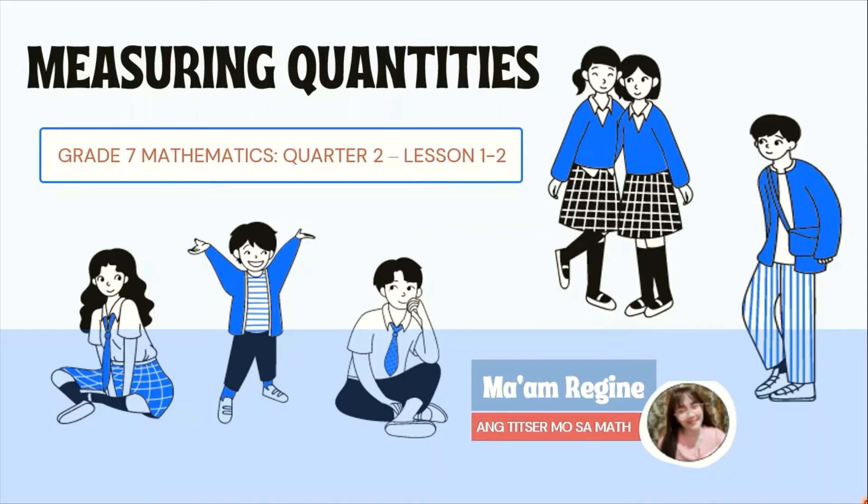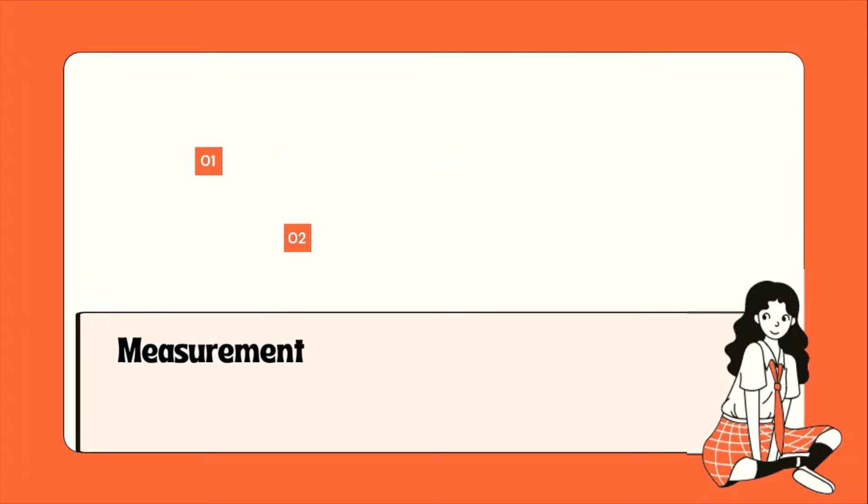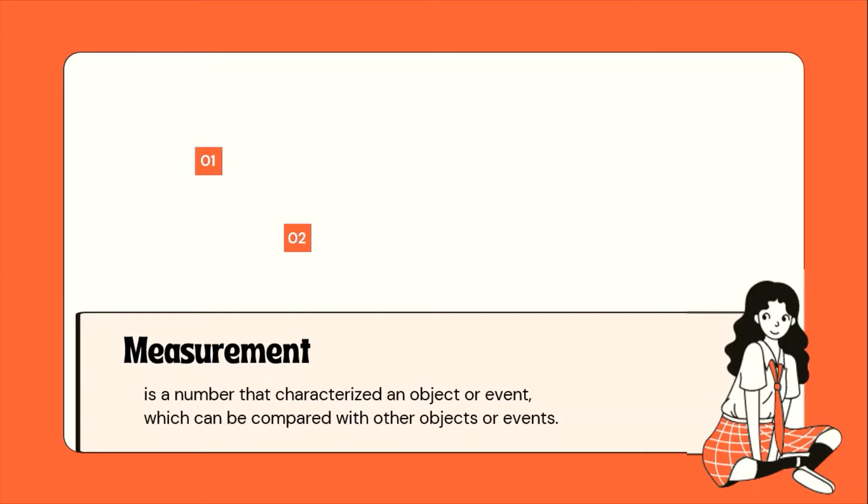So, let's do the math. Measurement is a number that characterized an object or event, which can be compared with other objects or events.